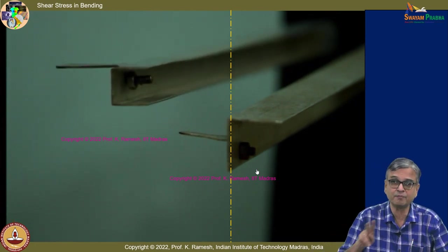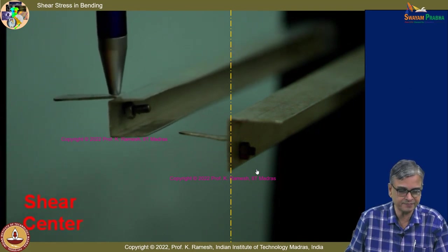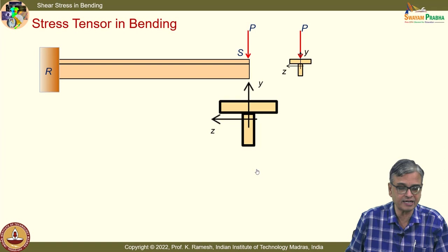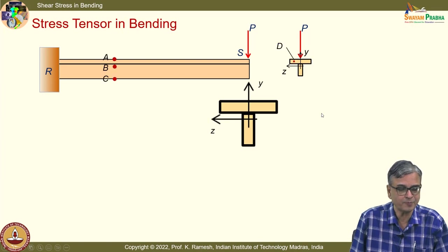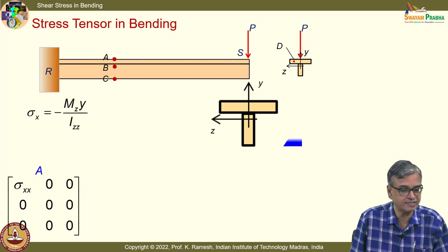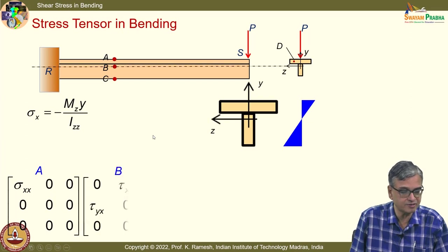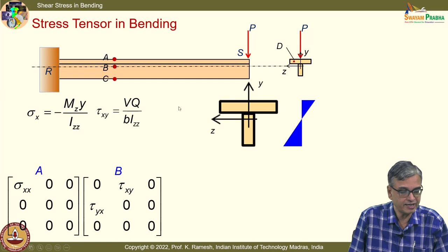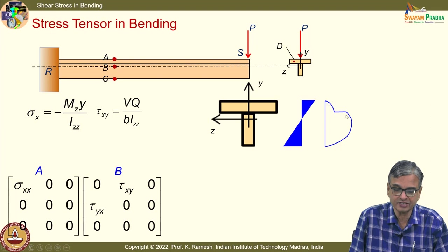We have also looked at T-beams, used in many applications. Writing the stress tensor at point A is very simple — only σ_xx exists from the flexure formula. For point B on the centroidal/neutral axis, since there is one material, you have only τ_xy and τ_yx, with the expression τ_xy = VQ / (b·I_ZZ). The typical bending stress variation is triangular and the shear stress variation τ_xy is parabolic, but these values are very small compared to the bending stress.